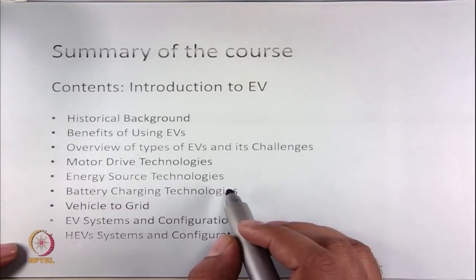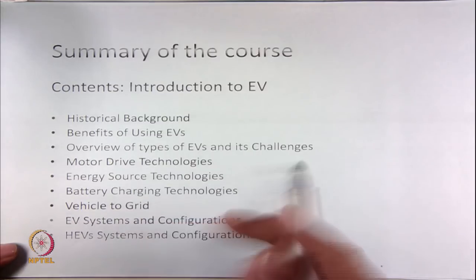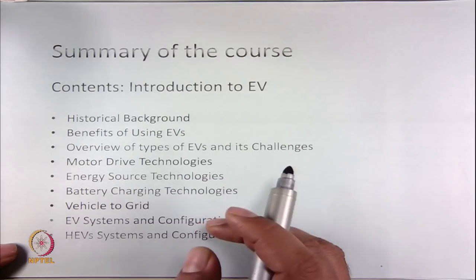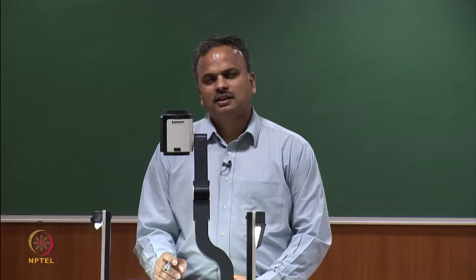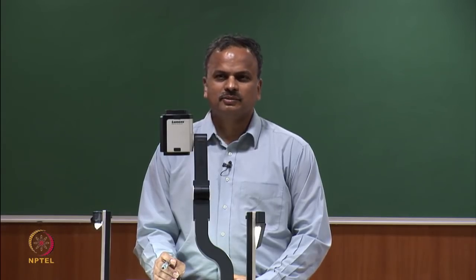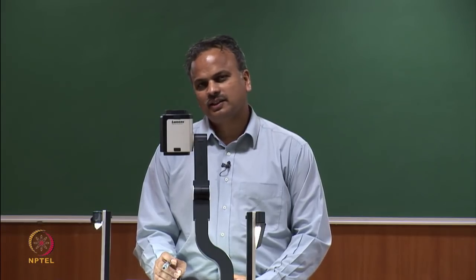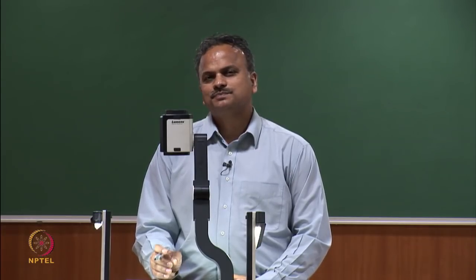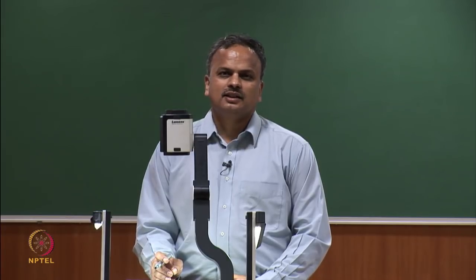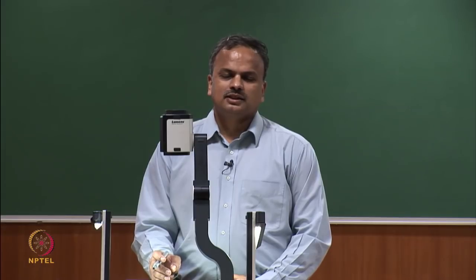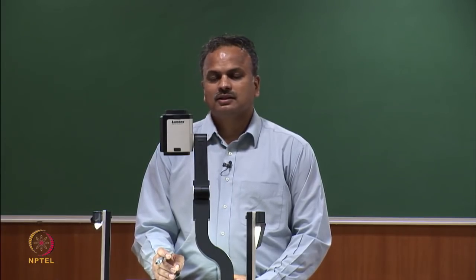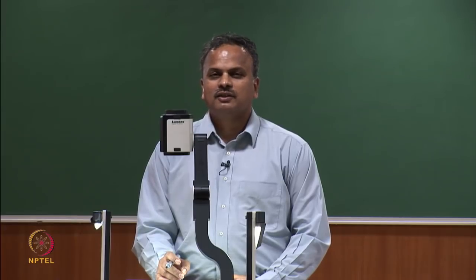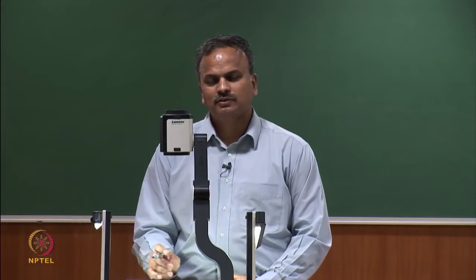We discussed the different types of EVs and challenges. The divisions of EV include pure EV and hybrid EV. Under pure EV we have battery electric vehicles, fuel cell electric vehicles, ultra-capacitor electric vehicles, and ultra-flywheel electric vehicles. Under hybrid electric vehicles we have micro hybrid, mild hybrid, and full hybrid electric vehicles — these are the three types of conventional hybrid electric vehicles.